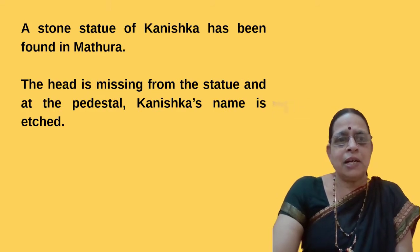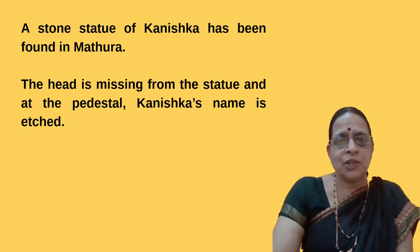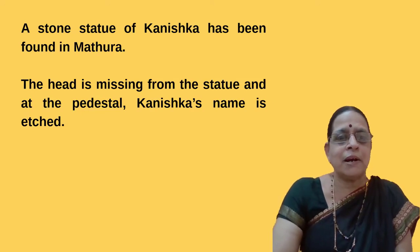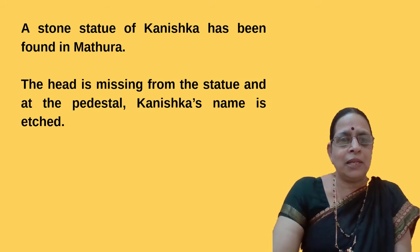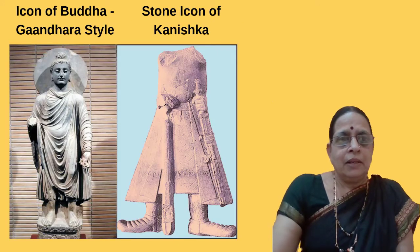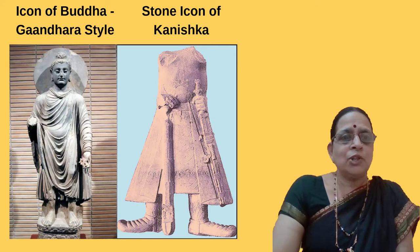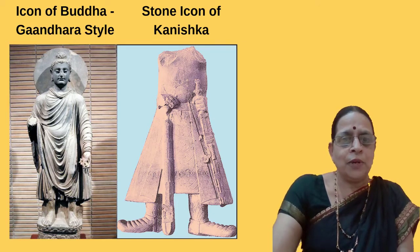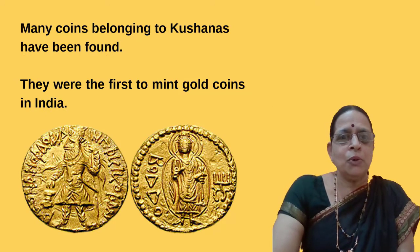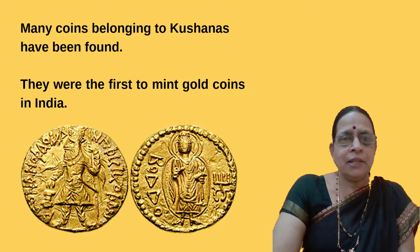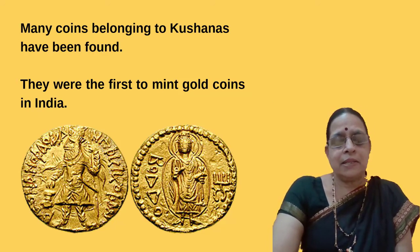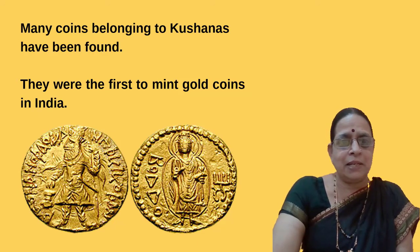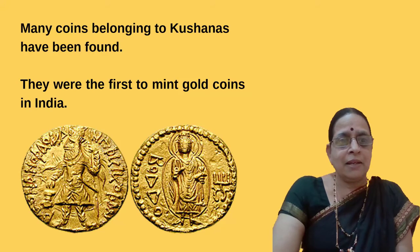A stone statue of Kanishka has been found in Mathura, though the head is missing. The name Kanishka is inscribed on the pedestal — the supporting column at the bottom. Many coins belonging to the Kushanas have been found. They were the first to mint gold coins in India, which represents economic prosperity and shows that his administration reached a height of progress during that period.